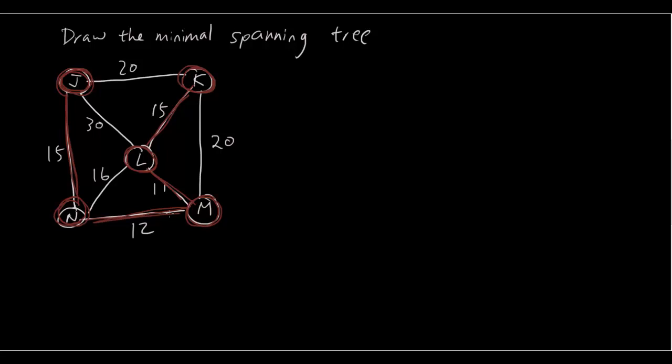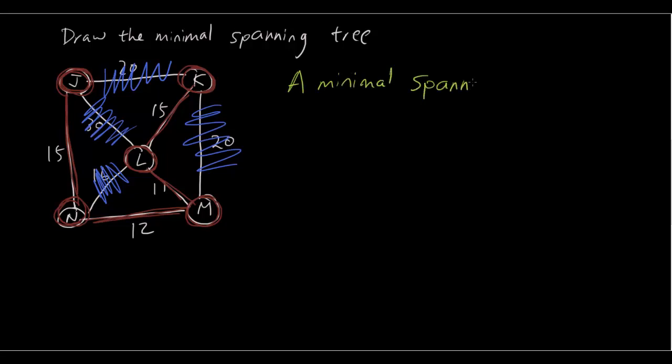That I'm also going to cross out the arcs that we're going to get rid of so this is not necessary this is not necessary this is not necessary and this is not necessary. So the red part signifies it's a minimal spanning tree. A minimal spanning tree cannot contain any loops.